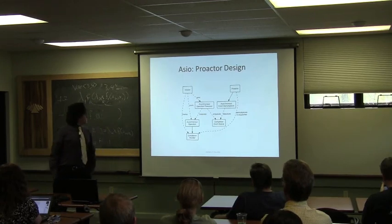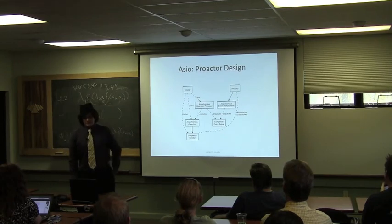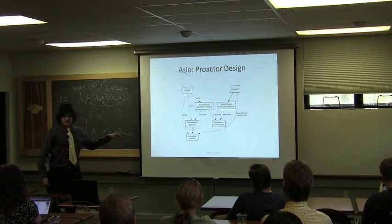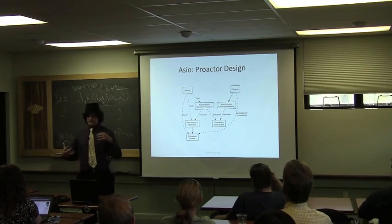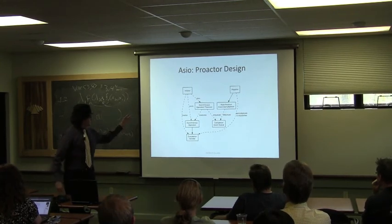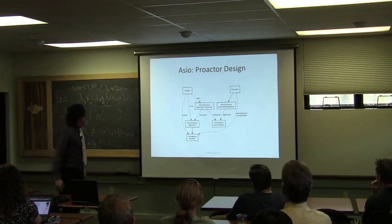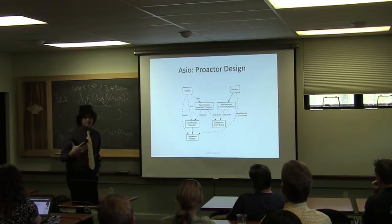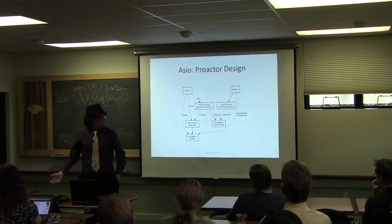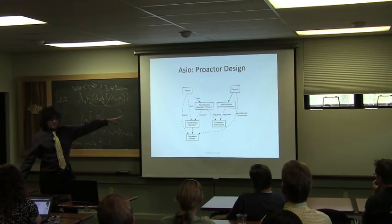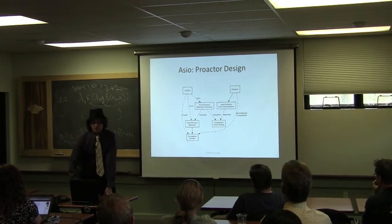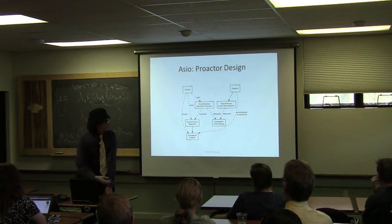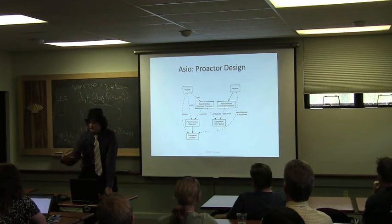This is the diagram of a pro-actor based design. We have some asynchronous operation that we want to perform and an initiator who says they want to perform it. They pass it off to an asynchronous operations processor, it gets executed asynchronously, and eventually we end up with a completion event. That completion event is dequeued from a completion queue by a pro-actor — what in Asio we call IOService. When you call IOService.run or IOService.poll, you're calling the demultiplexer which pulls out completion events to execute.